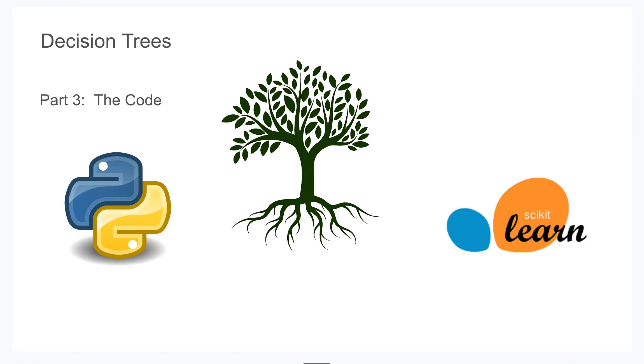All right, this is part three of decision trees. In the previous video I went over how you can clean your data using pandas, so we build upon that and we're going to get code running that's going to actually build the tree and display it visually.